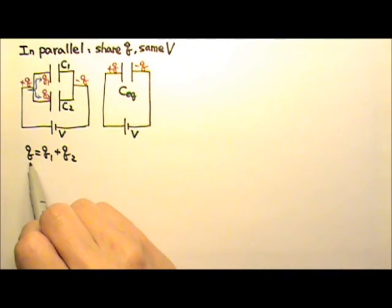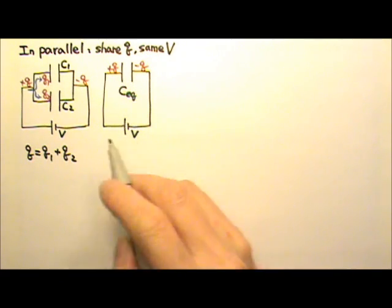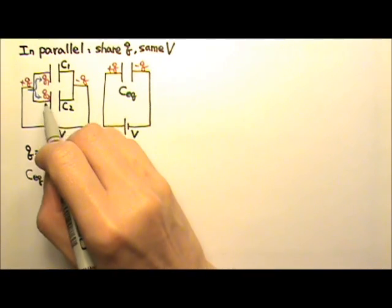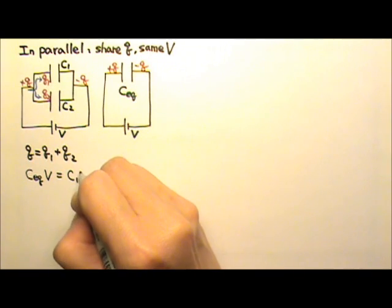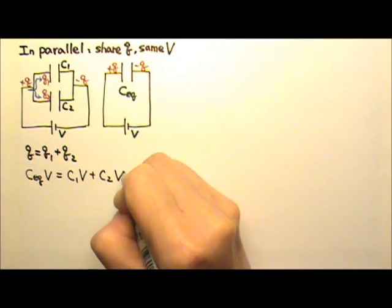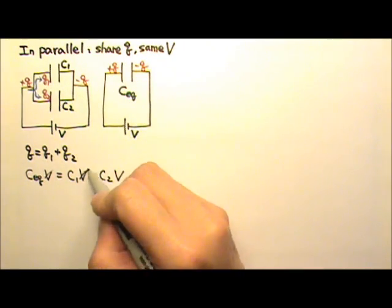Since Q equals CV, this Q would equal to the equivalent C times V. And Q1 would equal to C1 times V, and Q2 is C2 times V. Because they all have the same voltage, the Vs can cancel.